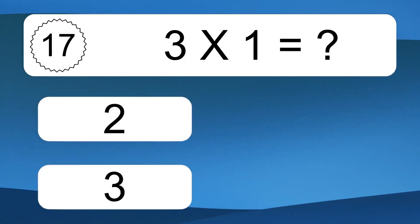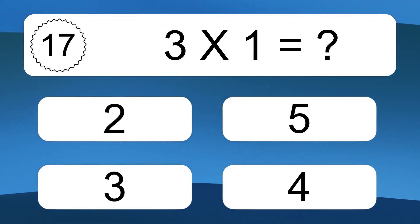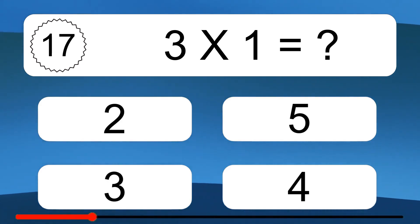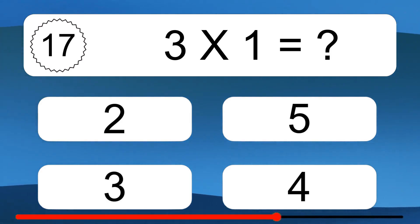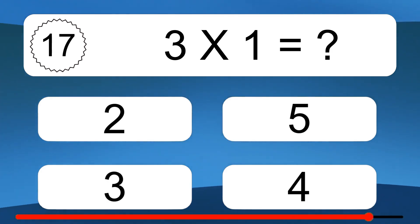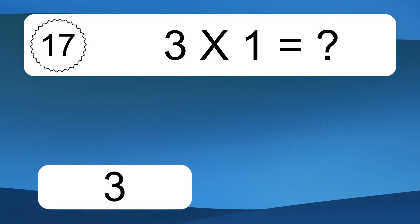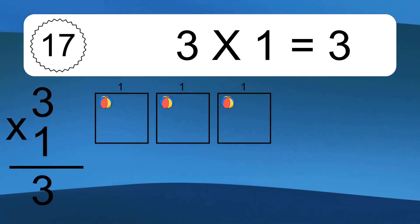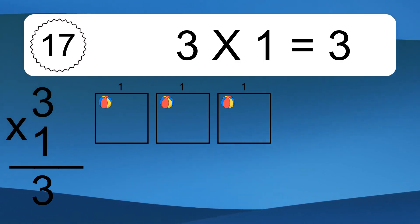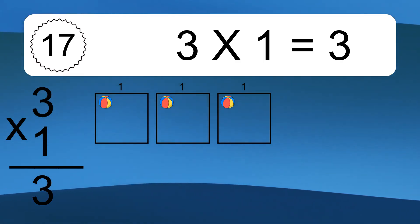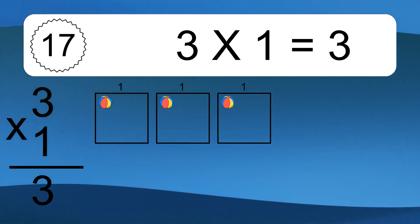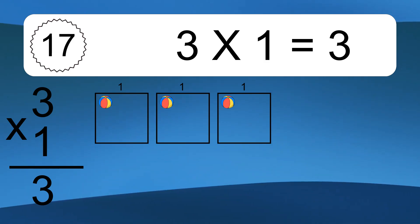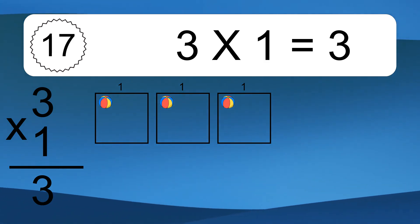3 times 1 equals what? We have 3 boxes and each box has 1 colorful ball inside. If you count all the balls in all the boxes together, you will have 3 times 1 balls. This equals 3 balls.